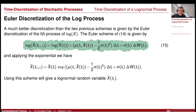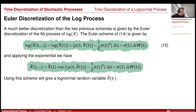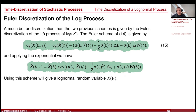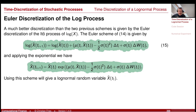Applying the exponential function to both sides, I get X̃ at the next time equal to X̃ at the previous time multiplied by the exponential of all that. If mu were zero and sigma did not depend on time, you would have deterministic functions and constants here — you would actually have the exact solution. This is only a numerical scheme because sigma could depend on time, and mu could depend on time and X, so I fix the starting point.